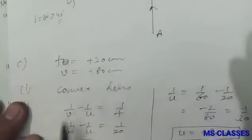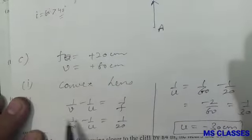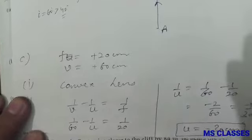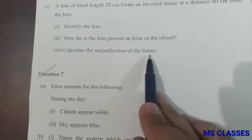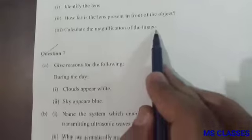Part (c): A lens of focal length 20 centimeters forms an inverted image at a distance 60 centimeters from the lens. Identify the lens: convex lens. How far is the lens present in front of the object? Here, f is plus 20, v is 60, and this is the lens formula, so from here we get u as minus 30 centimeters. Calculate the magnification of the image. As m is v by u, so v is 60 and u is minus 30, so m will be minus 2.